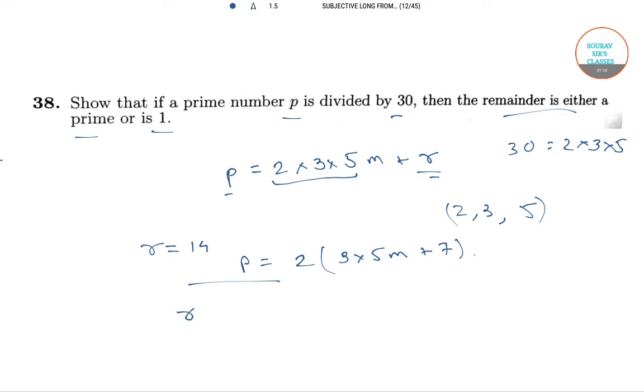R can be a composite number like 7 squared, as after 2, 3 and 5, 7 is the next prime number and the lowest composite of 7 is 7 squared which equals 49. But 49 is greater than 30 and R should be less than 30.